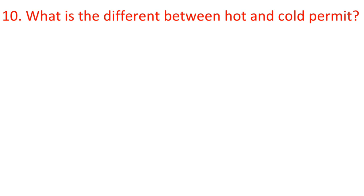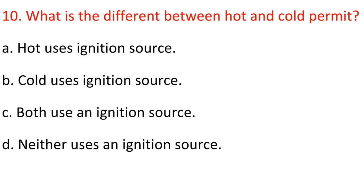Question 10: What is the difference between a hot and cold permit? A) Hot uses an ignition source, B) Cold uses an ignition source, C) Both use an ignition source, D) Neither uses an ignition source. Answer: A) Hot uses an ignition source.